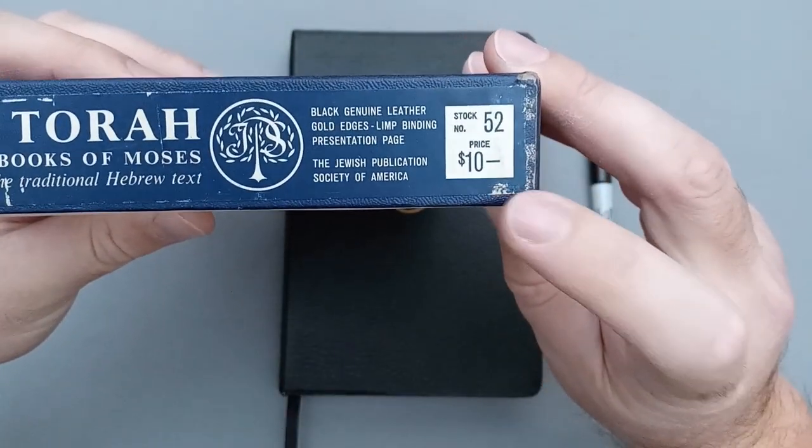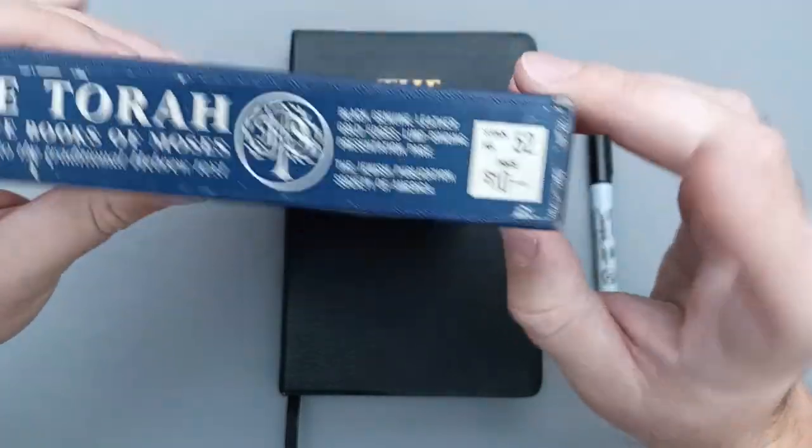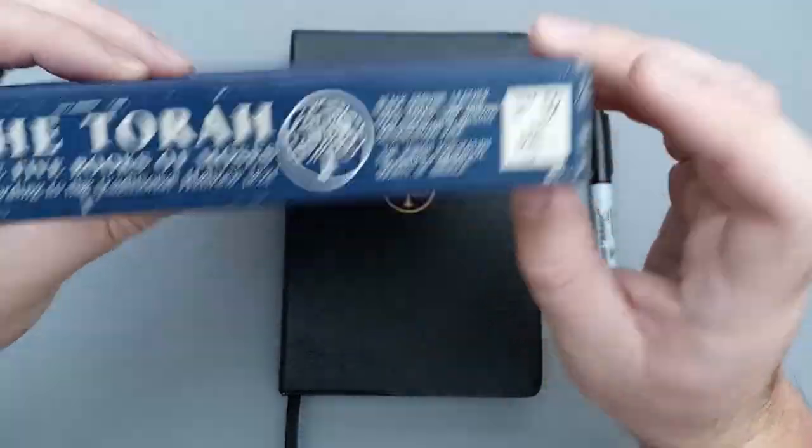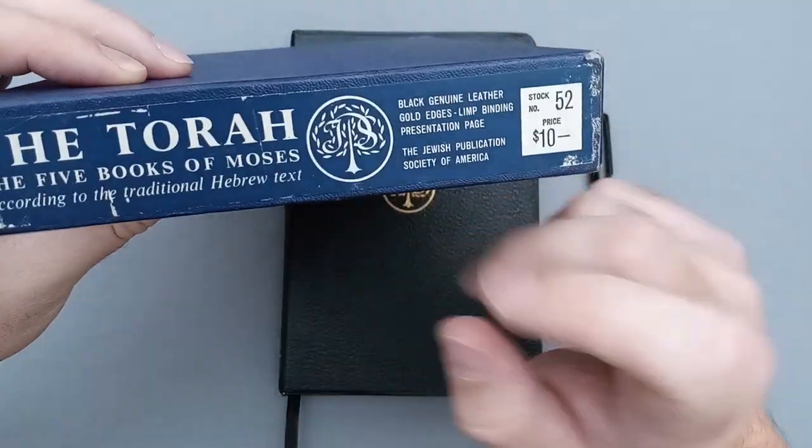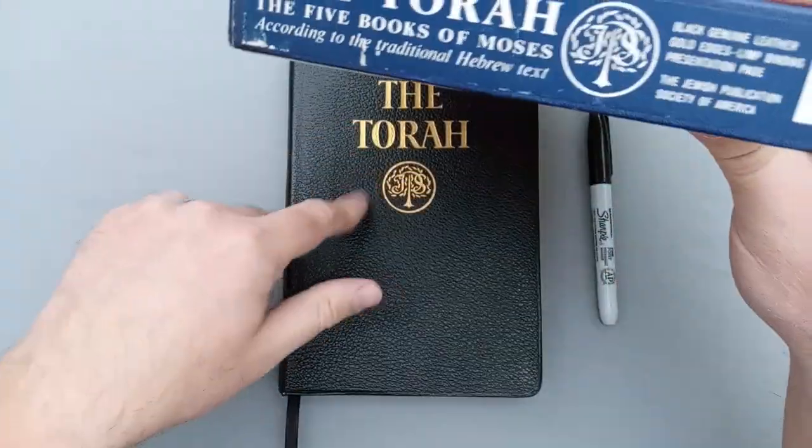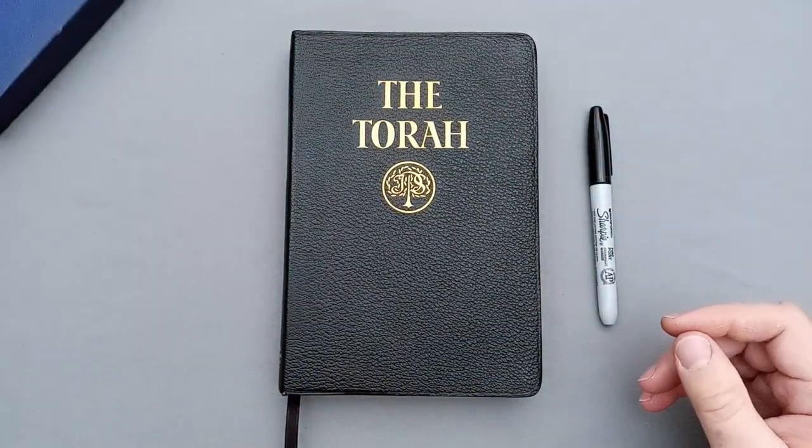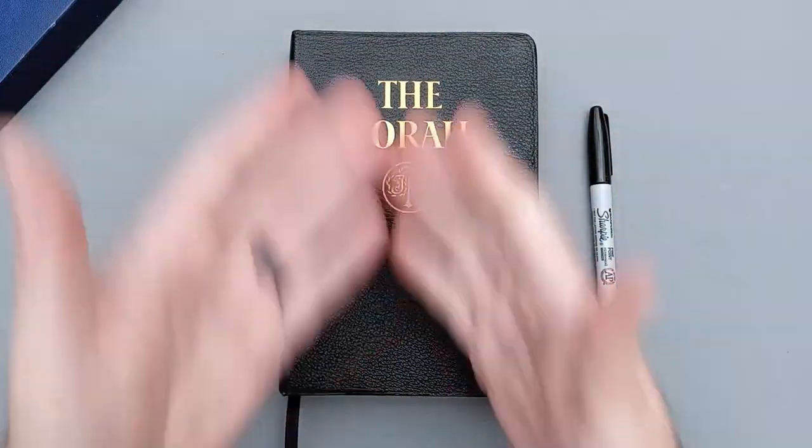You have your stock number there, number 52, and you can see the price, ten dollars. You can't find them anymore for this. I think the JPS, the last time I looked them up, was like 60 bucks, not just for the Torah but for the Old Testament, the Tanakh. It's definitely more than ten dollars, especially for a leather edition. I'm super excited it came in the box when I purchased it.